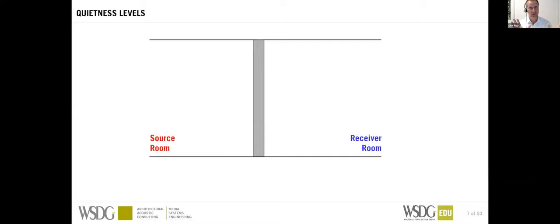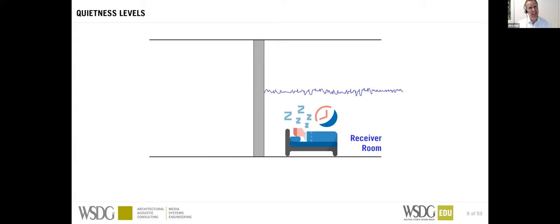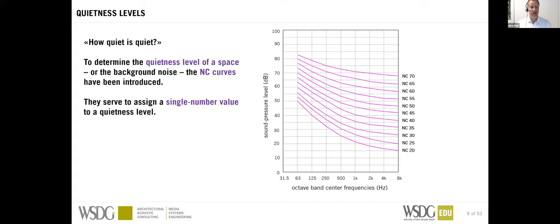In sound isolation, in contrast to room acoustics, we always talk about two spaces: the source room, where the music is playing — could be a club, a studio, any noisy space, even an elevator shaft — and the receiver room, typically where the neighbors want to sleep, or where musicians don't want to be bothered by audio passing through the wall. We need to define how quiet the space needs to be before we start work.